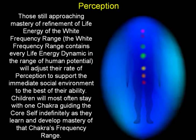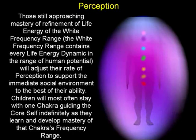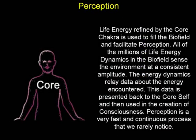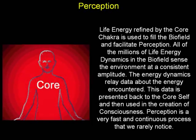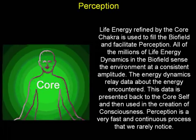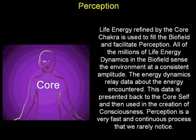Those still approaching mastery of refinement of life energy in the white frequency range will adjust their rate of perception to support the immediate social environment to the best of their ability. Children will most often stay with one chakra guiding the core self indefinitely as they learn and develop mastery of that chakra's frequency range. Life energy refined by the core chakra is used to fill the biofield and facilitate perception — all of the millions of life energy dynamics in the biofield sense the environment at a consistent amplitude. The energy dynamics relay data about the energy encountered, and this data is presented back to the core self and used in the creation of consciousness.